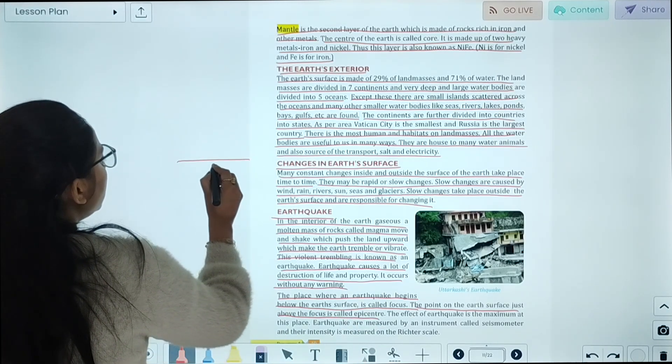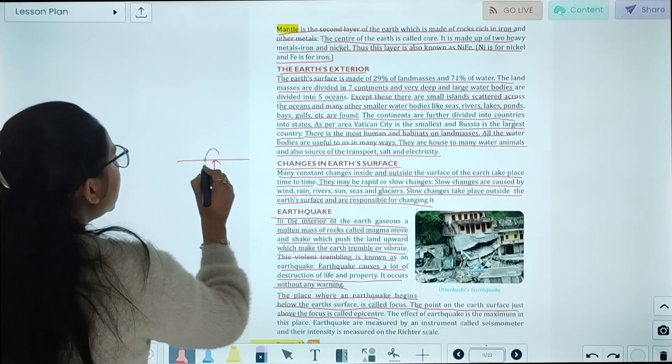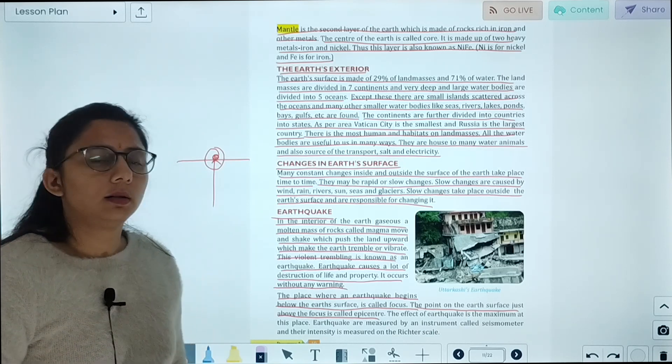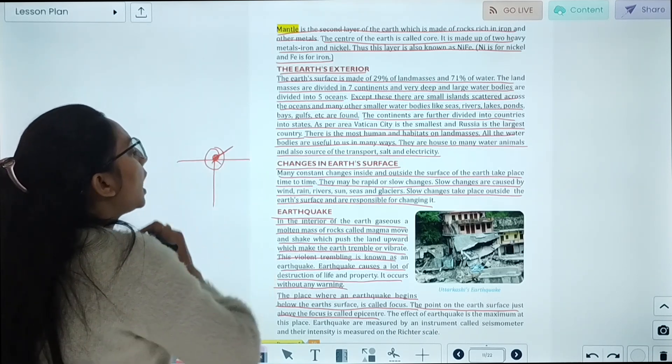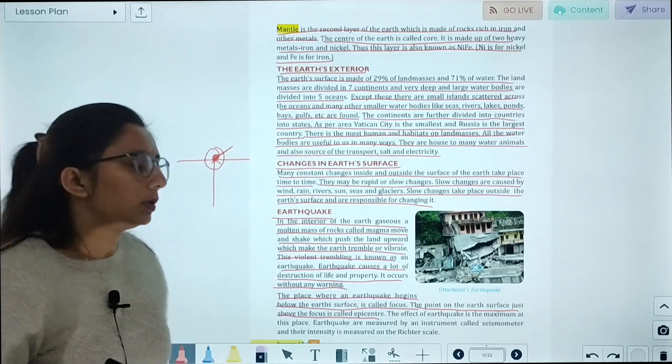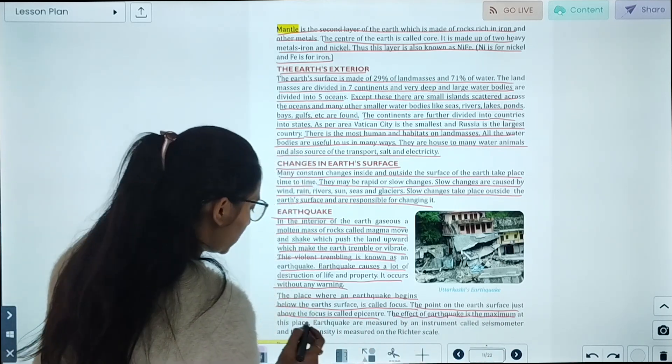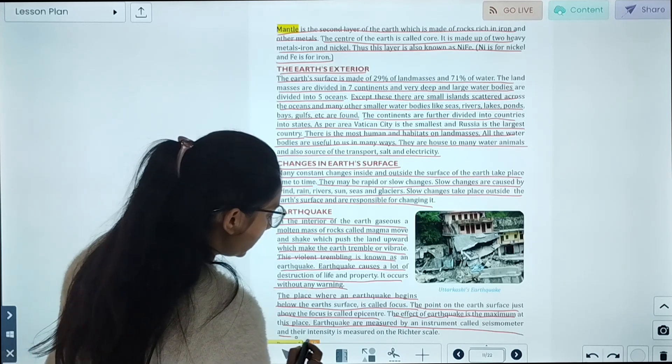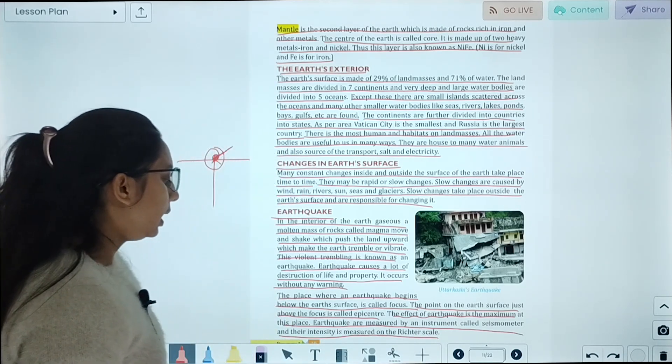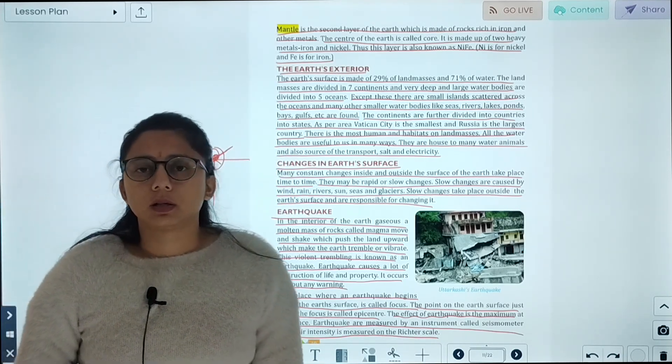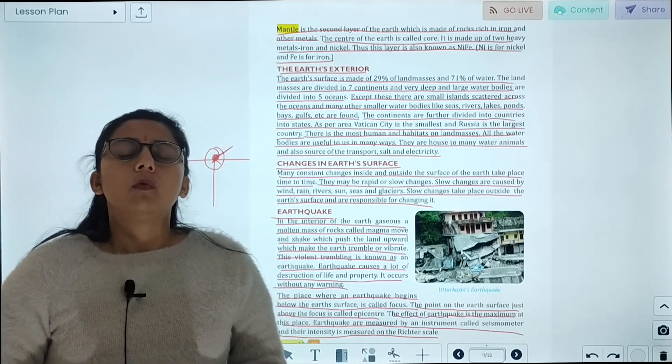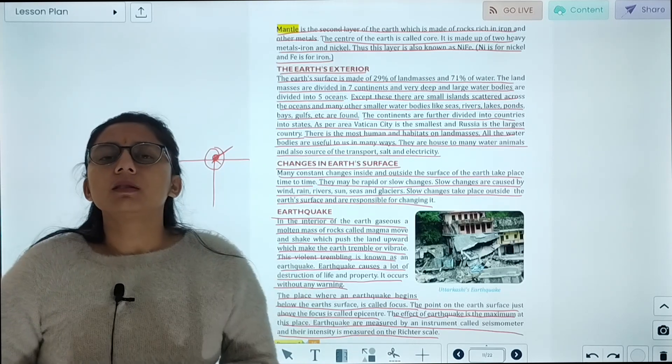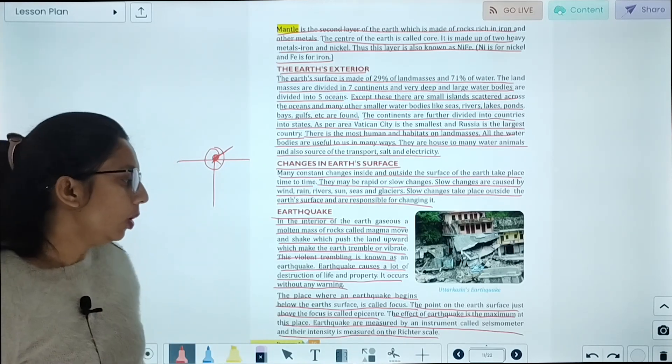Where it starts, we call it focus. And where there is more disruption, that is the epicenter. The epicenter is where the destruction is maximum. The effect of earthquake is maximum at this place. Earthquakes are measured by the instrument called seismometer, and the intensity is measured by the Richter scale.